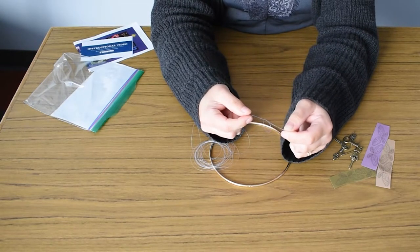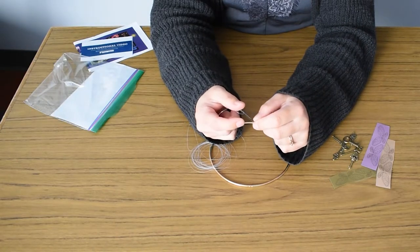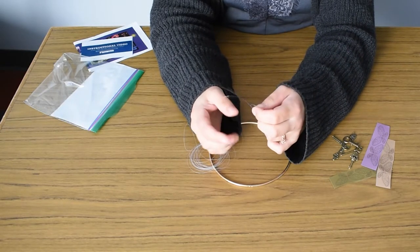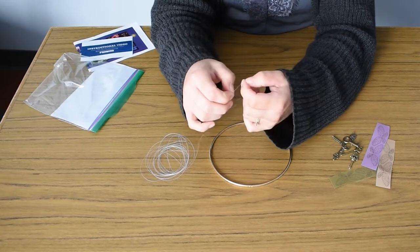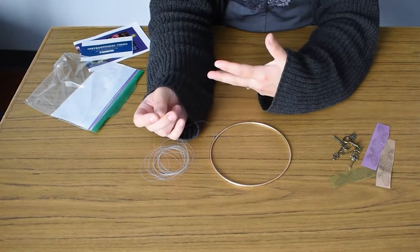So there's my overhand knot, and then you just pull it until it's nice and tight. And you can do that a couple of times to make sure it's secure. And then you can hang it with a paper clip or a push pin, wherever you want to.